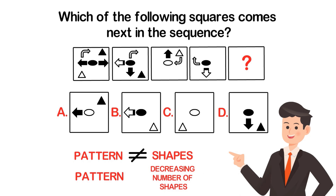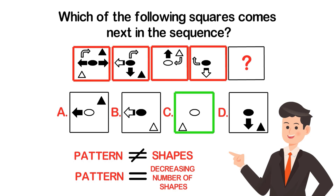The pattern here is the decreasing number of shapes. If you look at figure 1, it has 6 shapes. Figure 2 has 5, then 4, then 3. So the answer for figure 5 — the number of inside shapes should be 2. The correct answer here is choice C. Hopefully you nailed this question and now know how to answer similar problems on the test.